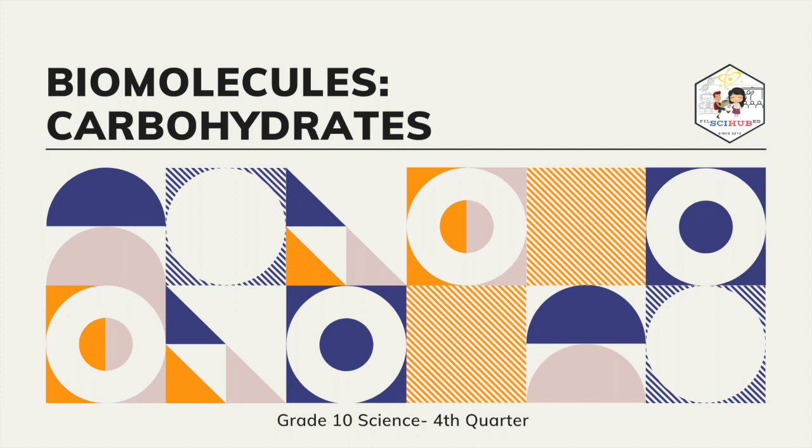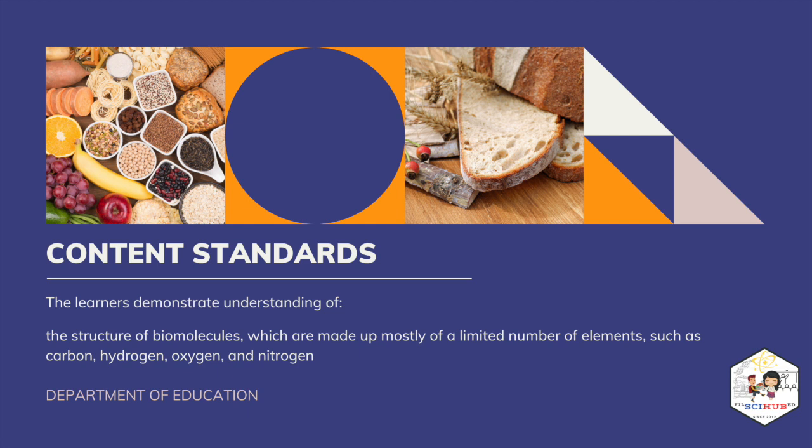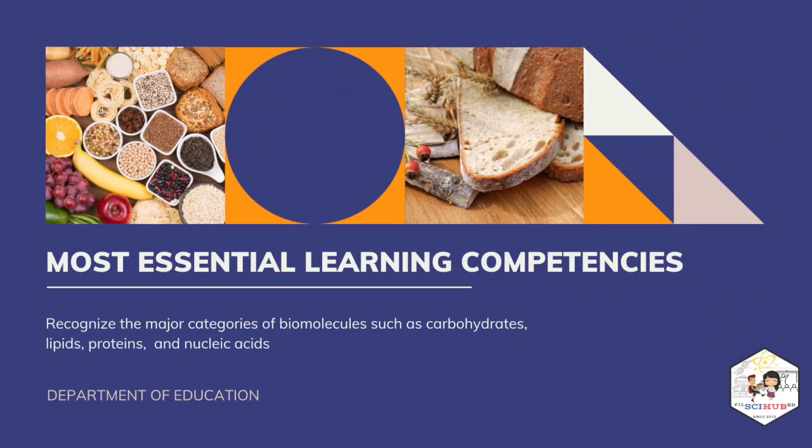This module covers topics for the fourth quarter of Grade 10 students. Let us first look at the content standards and most essential learning competencies the Department of Education has suggested. Content standards: the learners demonstrate understanding of the structure of biomolecules, which are made up mostly of a limited number of elements such as carbon, hydrogen, oxygen, and nitrogen. Most essential learning competency: to recognize the major categories of biomolecules such as carbohydrates, lipids, proteins, and nucleic acids. For this module, we will be focusing on developing a deeper understanding of the structures and functions of carbohydrates.